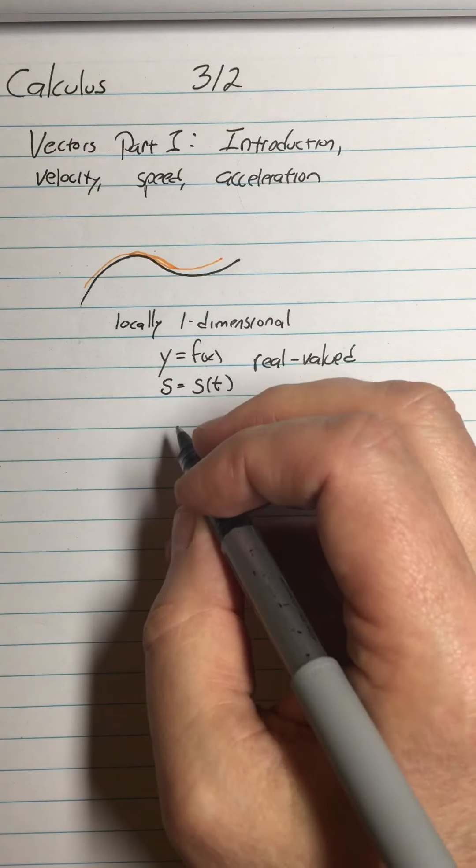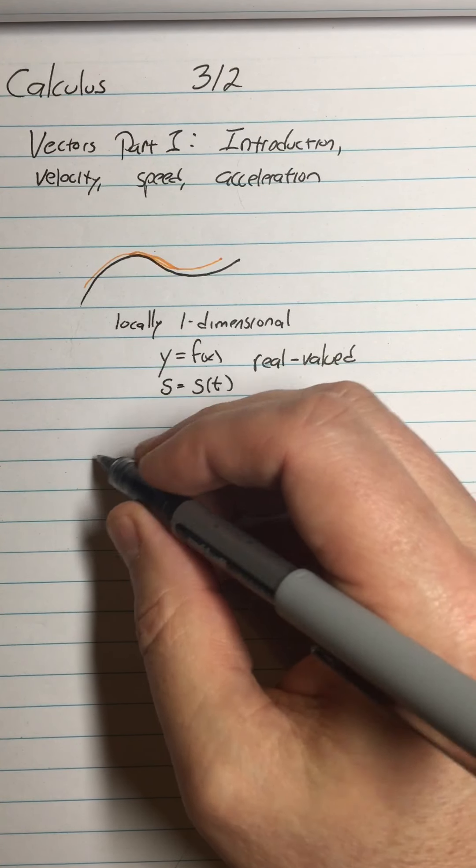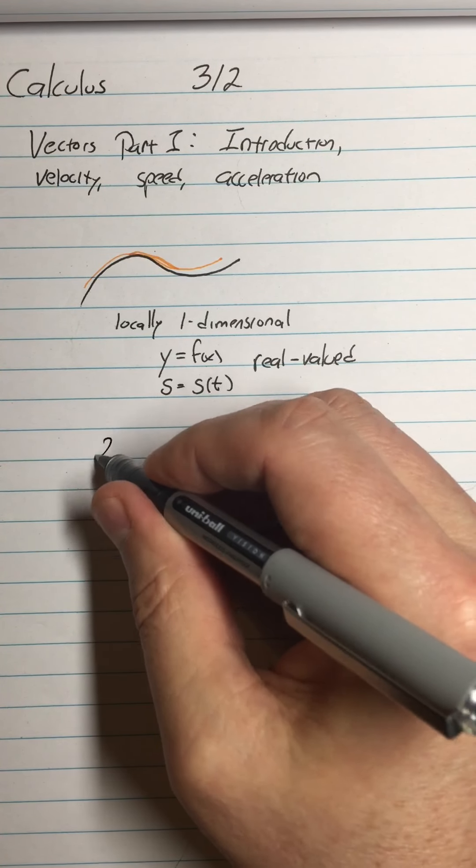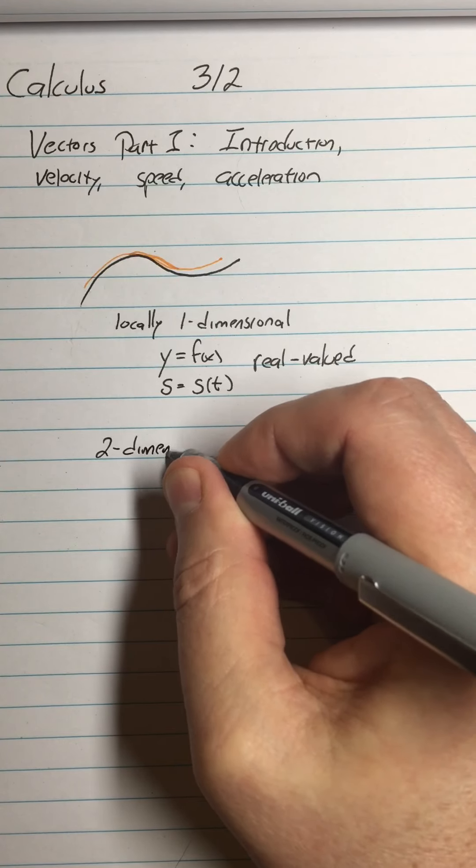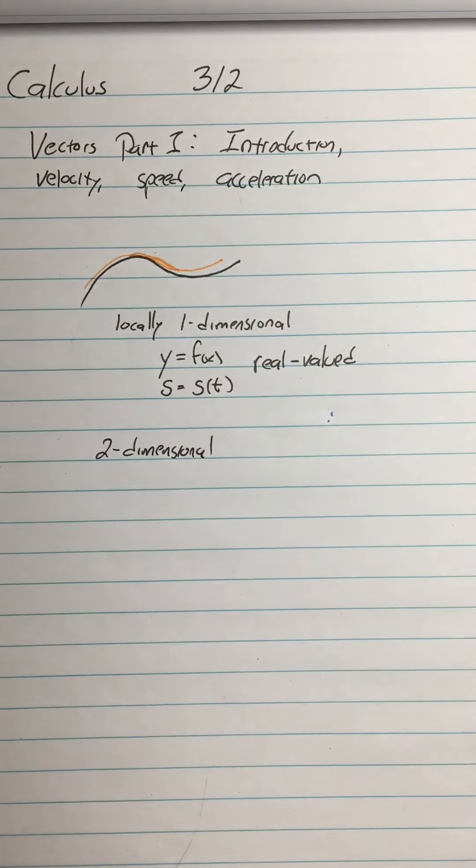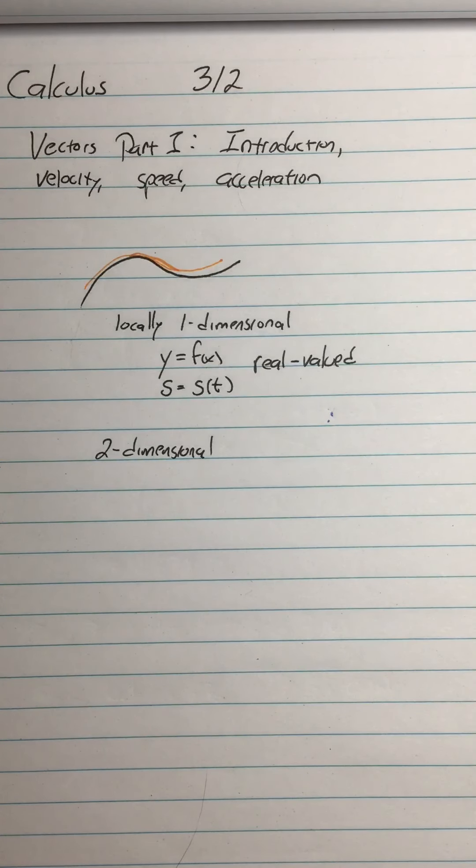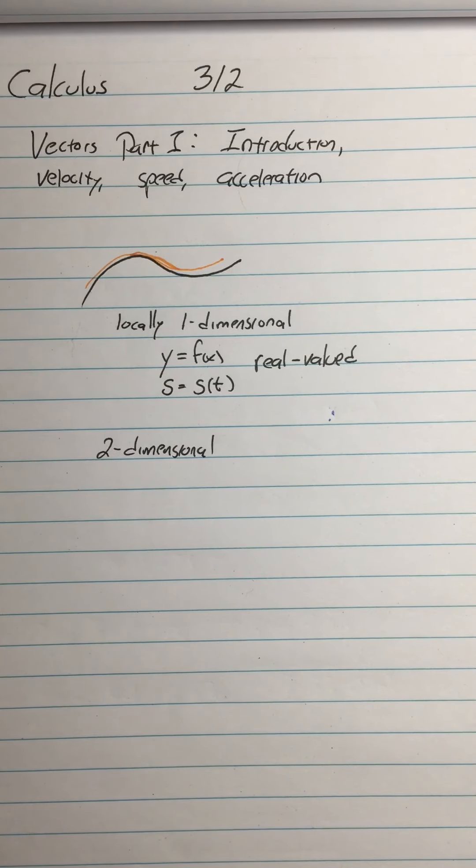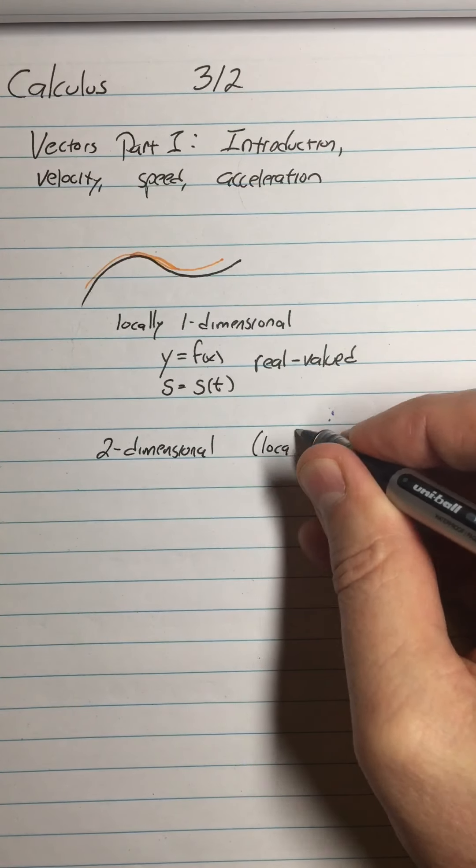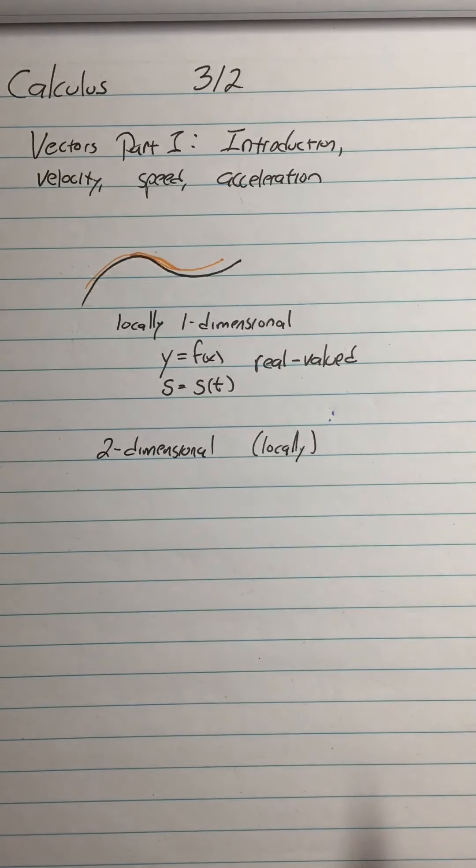Alright so if you want to handle locally two-dimensional motion, now I'll omit the locally, so it's locally two-dimensional. For example the surface of the earth is locally two-dimensional so that's why all our maps are two-dimensional maps. We use a plane to represent your position on the earth and it works pretty well because the globe is locally two-dimensional but of course if you really want to navigate with an airplane you need three-dimensional maps.